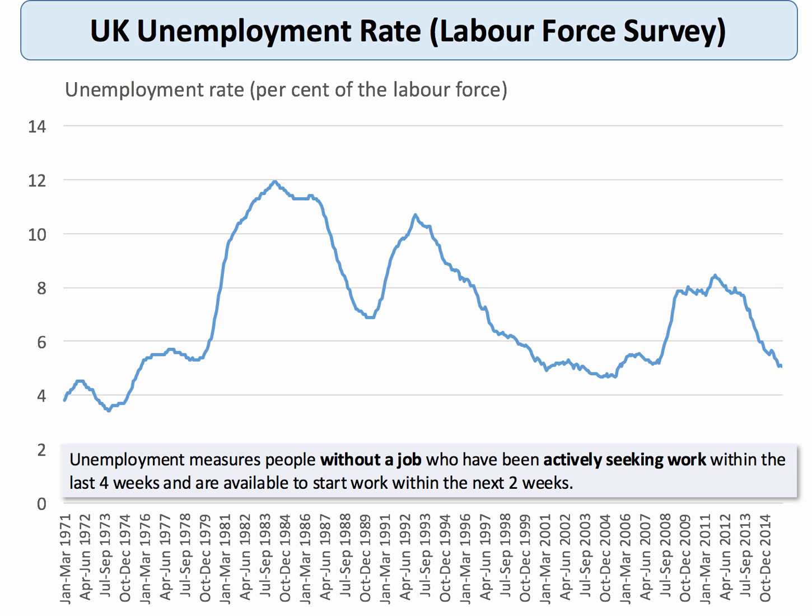Unemployment is now falling in the UK quite quickly and is hovering around the five percent mark. The key issue is how much further unemployment can fall — could it decline, for example, to four percent or less, which would take us back to a rate of unemployment last seen in the early to mid 1970s.